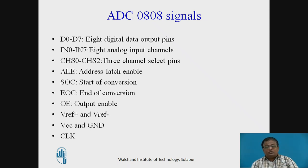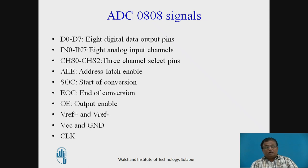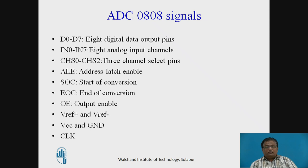V-reference plus and V-reference minus are the two reference voltage pins. For example, if V-reference plus is connected to +5V and V-reference minus is connected to ground, then for a 0V input the ADC will produce 00 as output, and for +5V input the ADC will produce FF as the digital output. VCC and GND are the required power supply pins, and the clock is an input signal required by the ADC; all internal operations take place in synchronization with this clock.